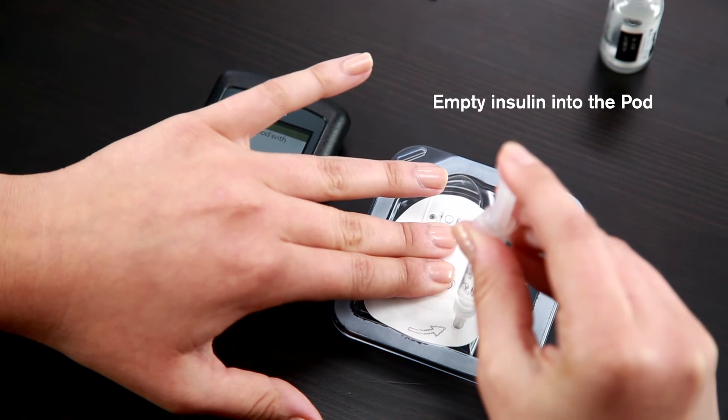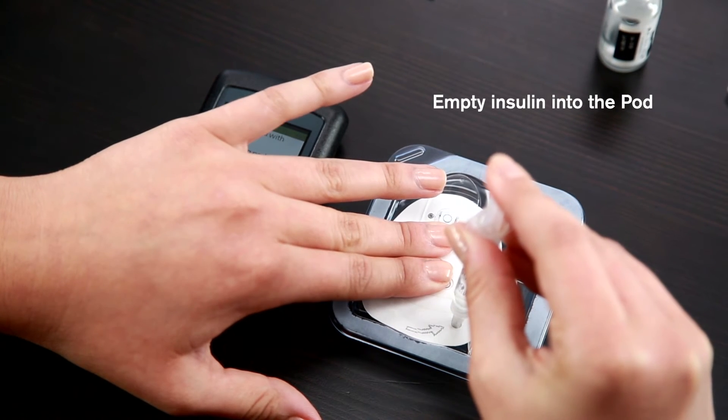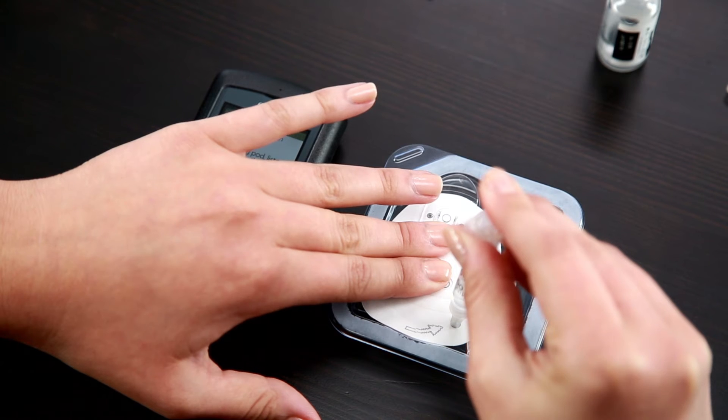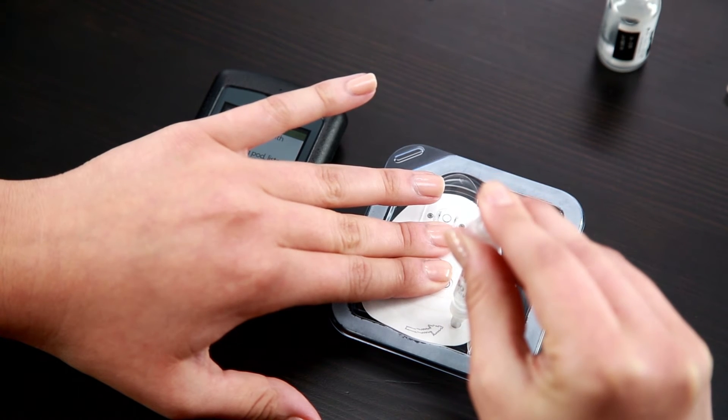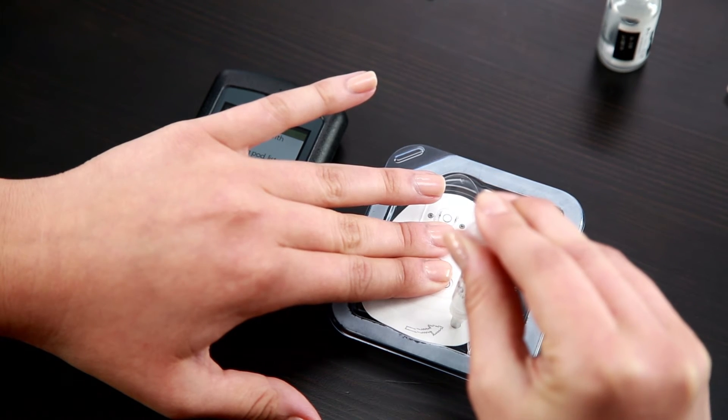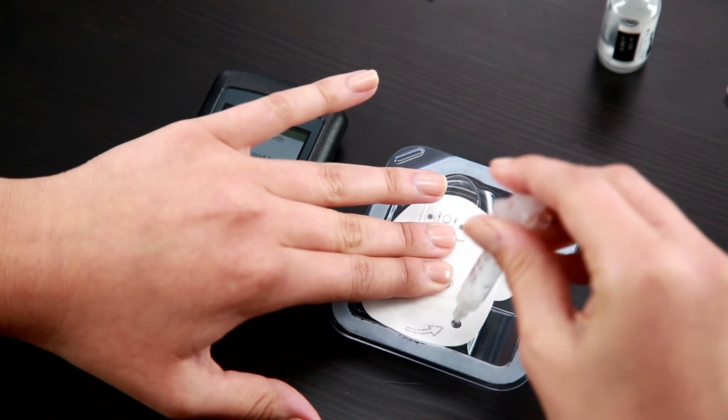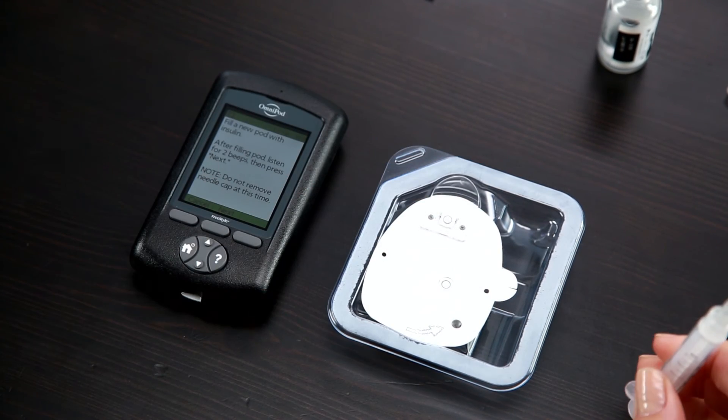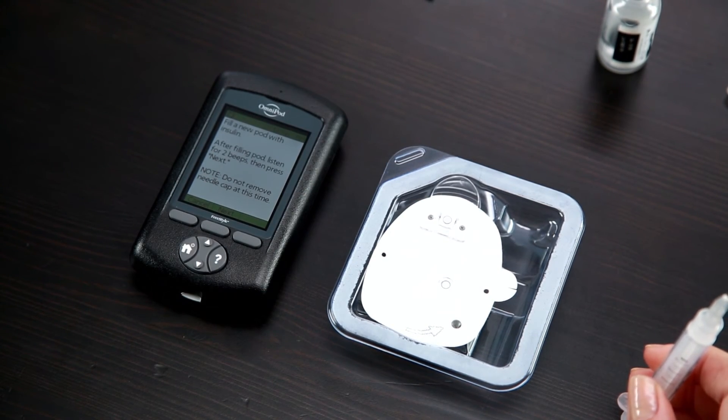Make sure to completely empty the syringe into the pod. If you hear two beeps and you still have insulin left in your syringe, continue filling until all the insulin is transferred to the pod. The pod will beep twice, indicating the system is ready to proceed. Please note it is important to hear these two beeps before you proceed.